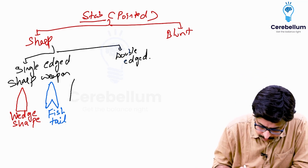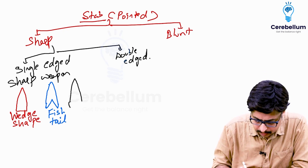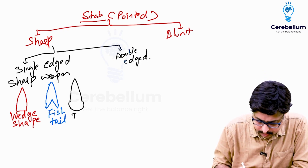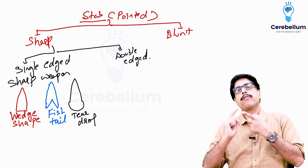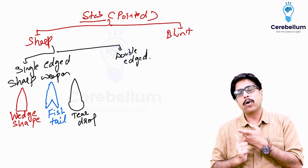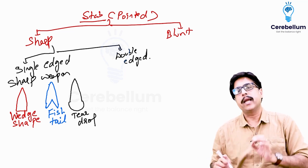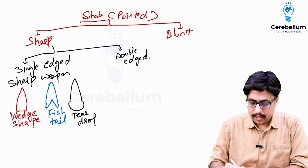Sometimes again one end will remain pointed and the other end becomes something like this — this is called tear drop. So these three shapes — wedge shape, fish tail, and tear drop — are seen in single-edged sharp weapons.